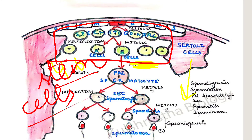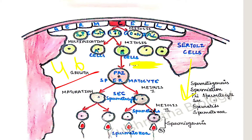Stem cells have the capacity to divide over and over and form new cells. This is a very wide topic — nowadays research is going on, and in the future these cells may be used to replace damaged cells, organs, or tissues. So A cells will be stem cells, and B cells are the ones we need to focus on. B cells grow in size — this is the growth phase.